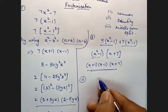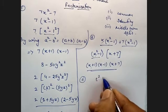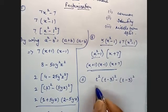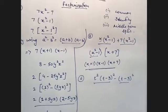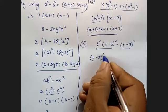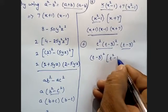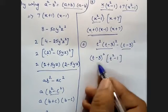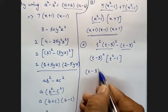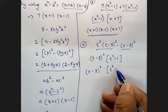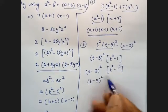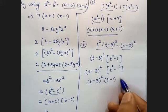Sixth sum: T squared into T minus 3 whole squared, minus T minus 3 whole squared. T minus 3 whole squared is common. What is left? T squared minus 1. Now T squared minus 1 is A squared minus B squared — 1 can be written as 1 squared. So the answer is T minus 3 whole squared into T plus 1 into T minus 1.